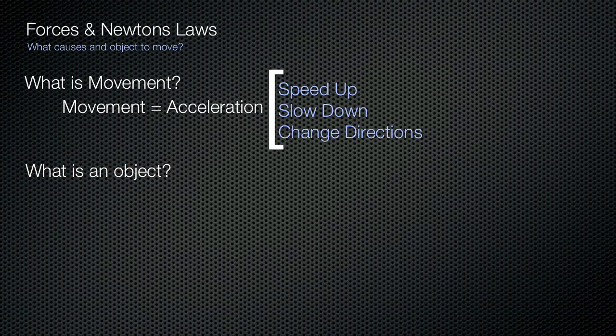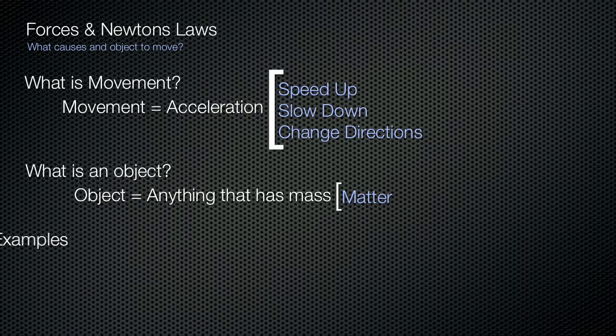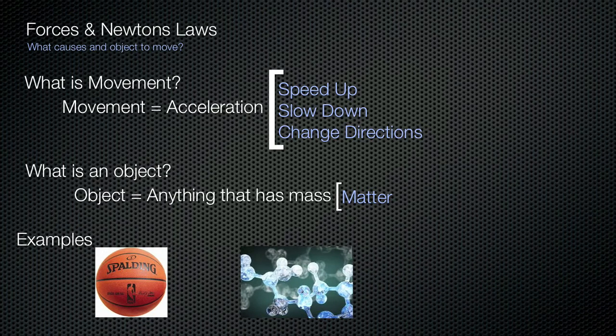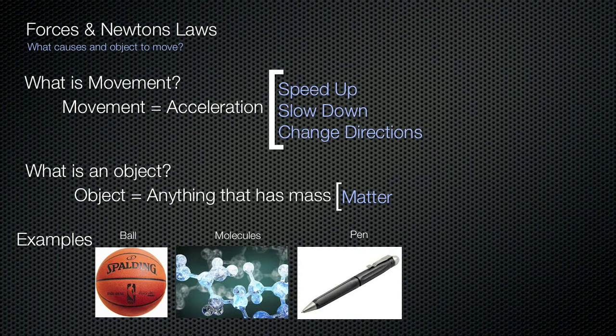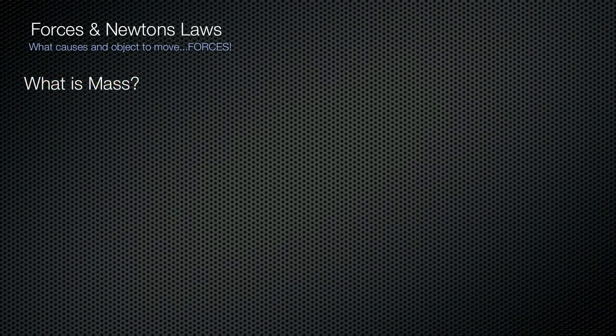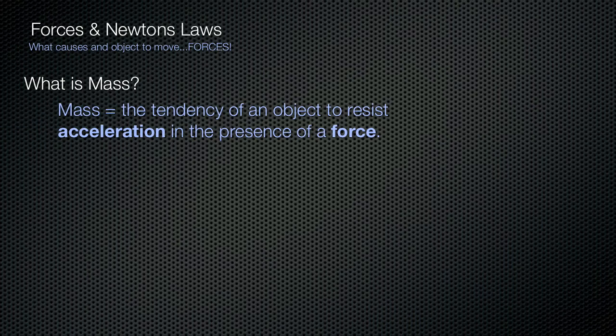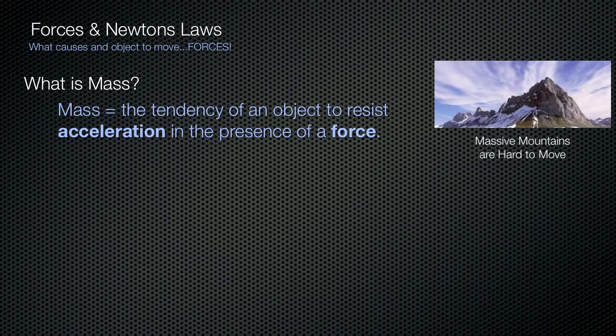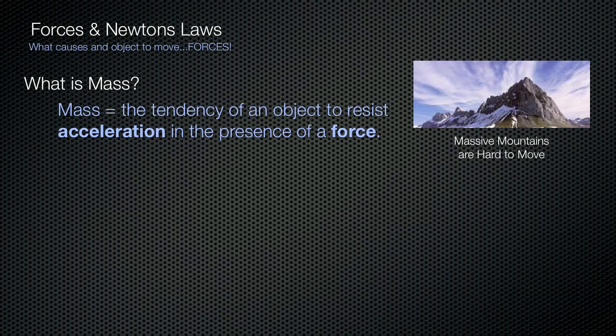The next question was: what is an object? An object is anything that has mass. Mass is the amount of matter in an object — anything we can perceive in our physical world, like a basketball, molecules, or a pen. And the better definition: mass is the tendency of an object to resist acceleration in the presence of a force. For instance, a mountain is not going to move easily because the mountain is massive. Massive mountains resist acceleration.